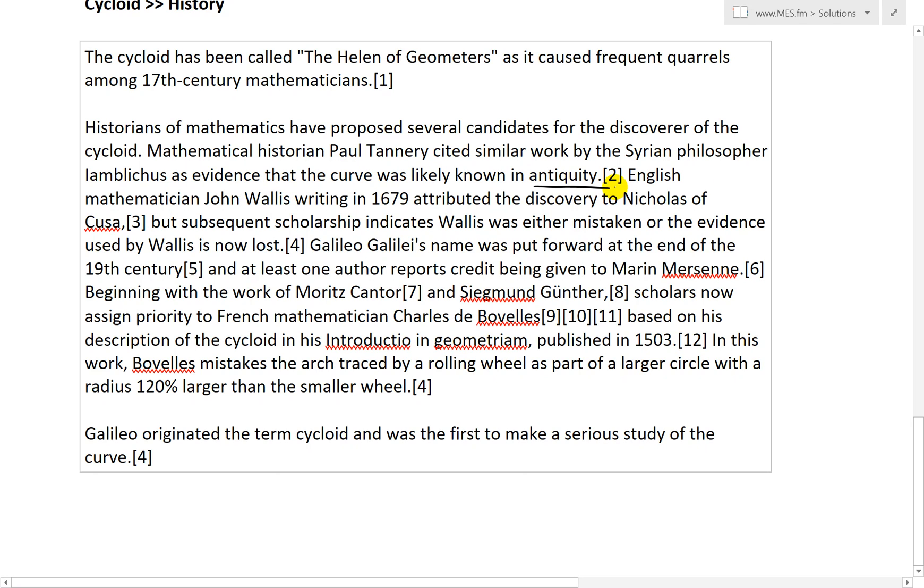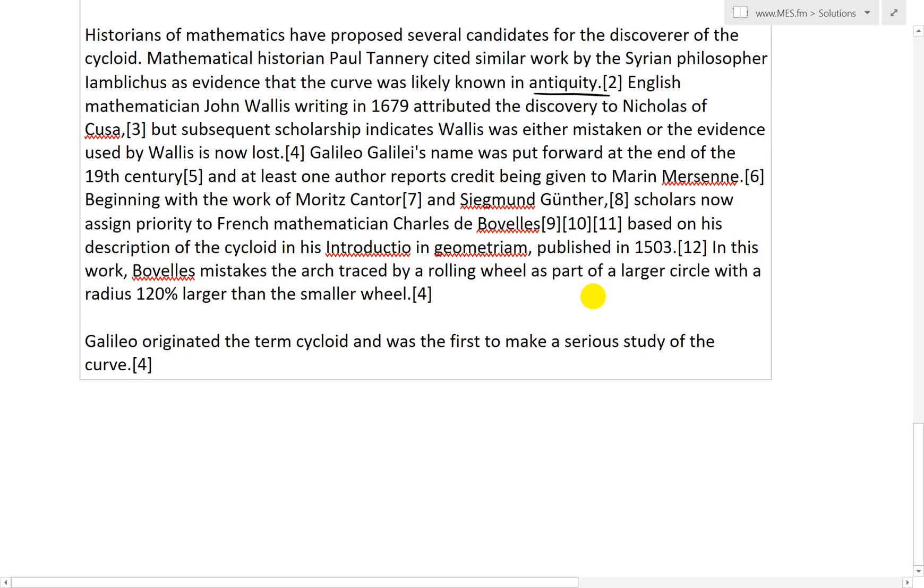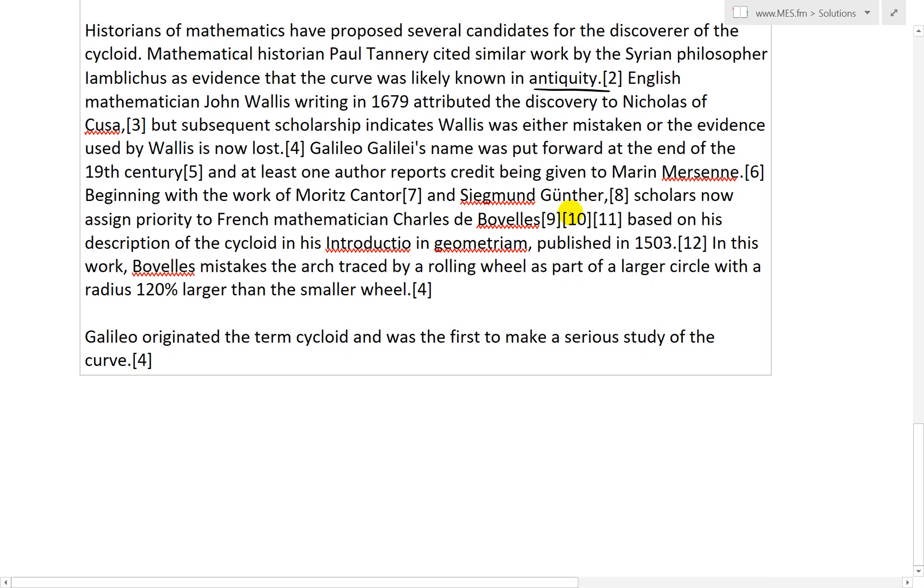English mathematician John Wallis, writing in 1679, attributed the discovery to Nicholas of Cusa, but subsequent scholarship indicates Wallis was either mistaken or the evidence used by Wallis is now lost. And Galileo Galilei's name was put forward at the end of the 19th century, and at least one author reports credit being given to Marin Mersenne, beginning with the work of Moritz Cantor.